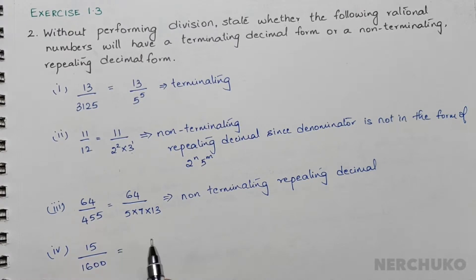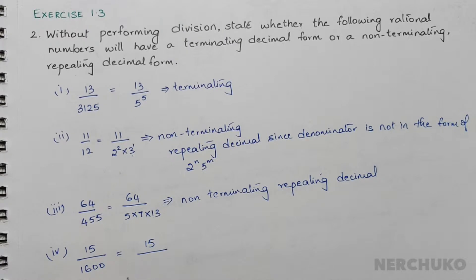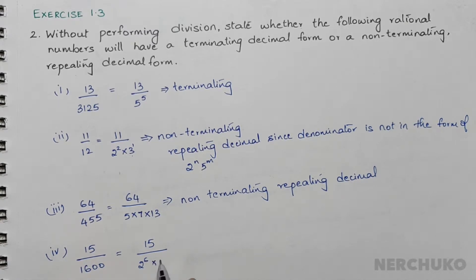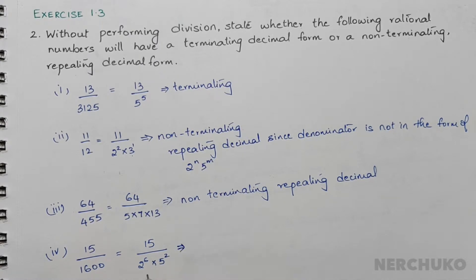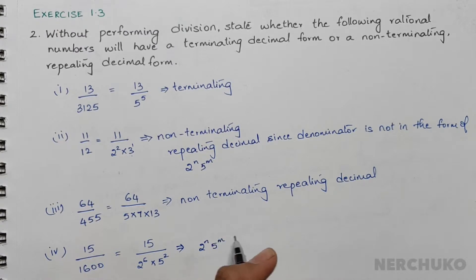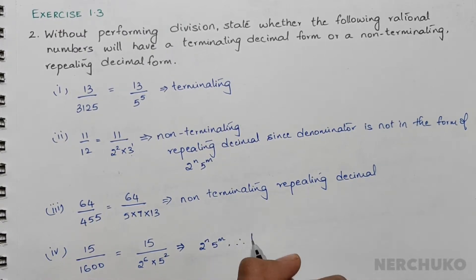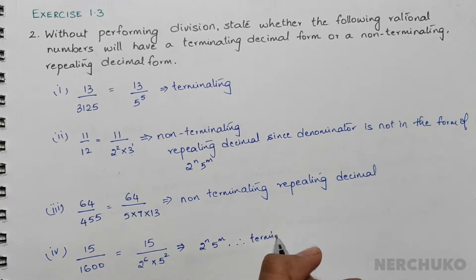For the fourth bit, we have 15 divided by 1600. After prime factorization, 1600 can be written as 2^6 × 5^2. Since the denominator is in the form of 2^n × 5^m, it is a terminating decimal.